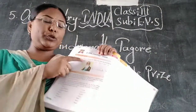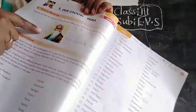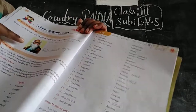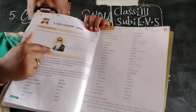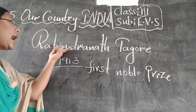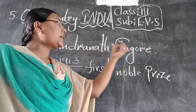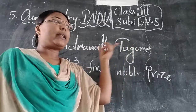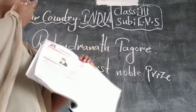Now it is time to warm up. Can you identify this picture? Who is he? What did he do for the country? He is Rabindranath Tagore.